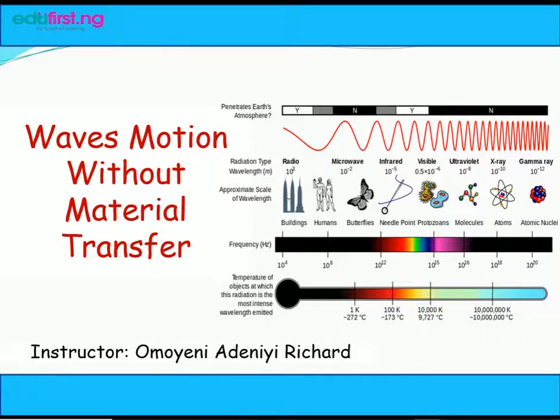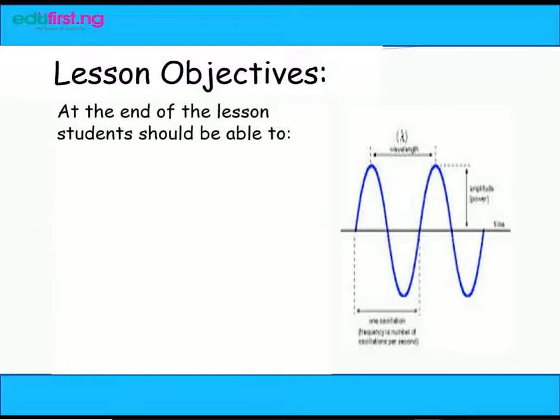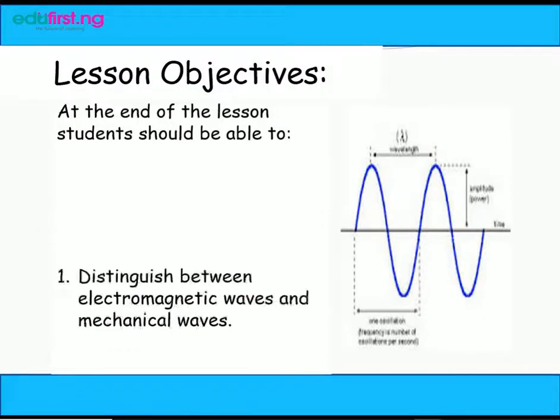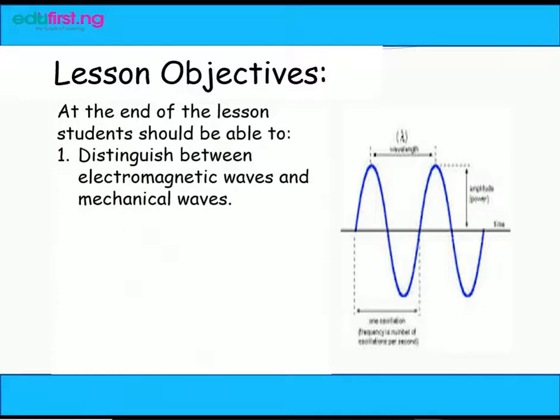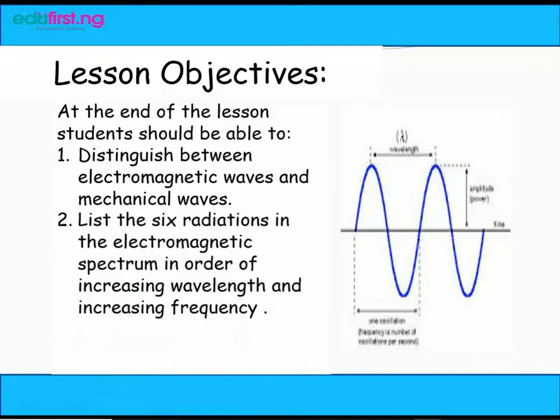Lesson objectives. At the end of the lesson, students should be able to: one, distinguish between electromagnetic waves and mechanical waves; two, list these radiations in electromagnetic spectrum in order of increasing wavelength and increasing frequency; three, state some uses of electromagnetic waves.